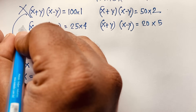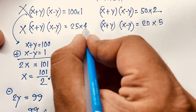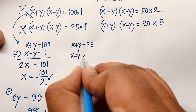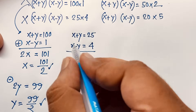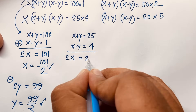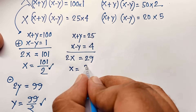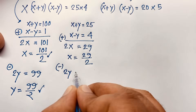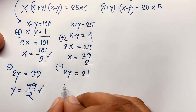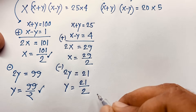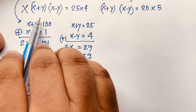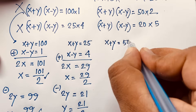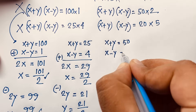Case 3: x plus y = 25 and x minus y = 4. Adding gives 2x = 29, so x = 29/2. Subtracting gives 2y = 21, so y = 21/2. Both are fractions, so Case 3 is also not possible. Now for Case 2: x plus y = 50 and x minus y = 2.